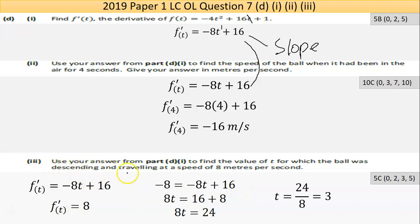Now part three says, use your answer from part D, part one, to find the value of T for which the ball was descending and traveling at a speed of eight metres per second. So that means negative eight. You can solve that as it's eight metres per second, but it's on the descending, so it's going down, so it's negative. So my slope function is this. It will tell me that my slope is negative eight. Should be a negative eight there. That negative eight is equal to, so the logic here: if these two things are equal, then these two things are equal.